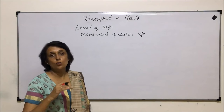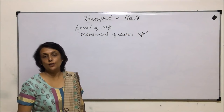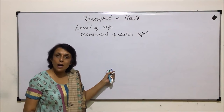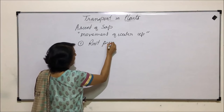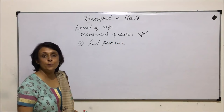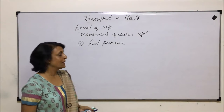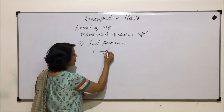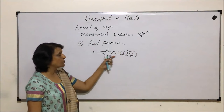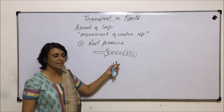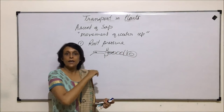Water moves upwards from the root up to the top, at the level of the leaf. There are various factors responsible for this upward movement of water. The first force which helps is known as root pressure. We need to understand what exactly root pressure is and how much water can be moved upwards with this pressure. Water goes in through root hair, then through cortical cells and endodermis up to the xylem vessel — this is a passive process.